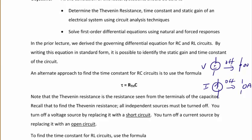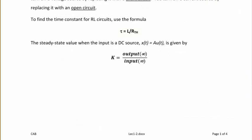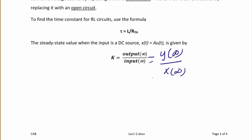In order to find the Thevenin equivalent resistance seen by an inductor, it's the same approach, except now the time constant is tau equal to L over R_Thevenin. The steady state value when the input is a DC source would be x(t) equal to A·u(t), with K equal to the output as time approaches infinity over the input as time approaches infinity — another way to write this is y(∞) over x(∞).